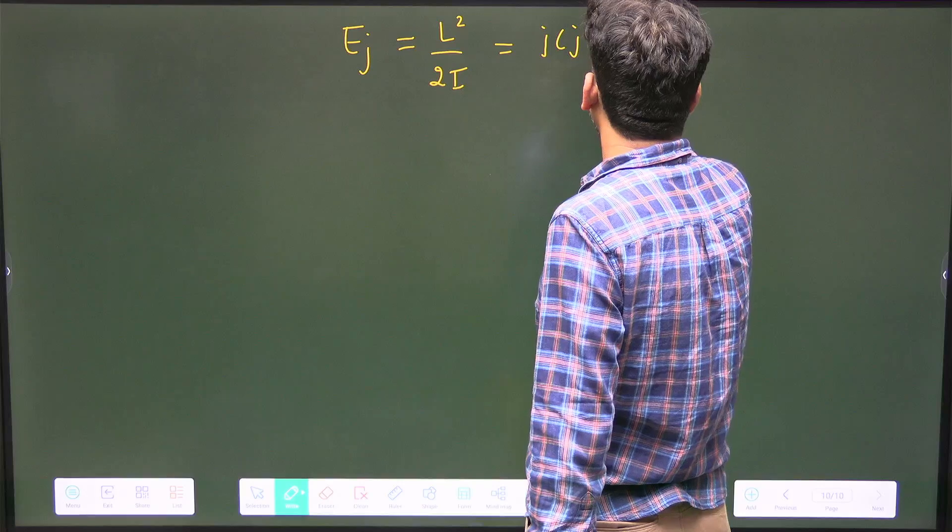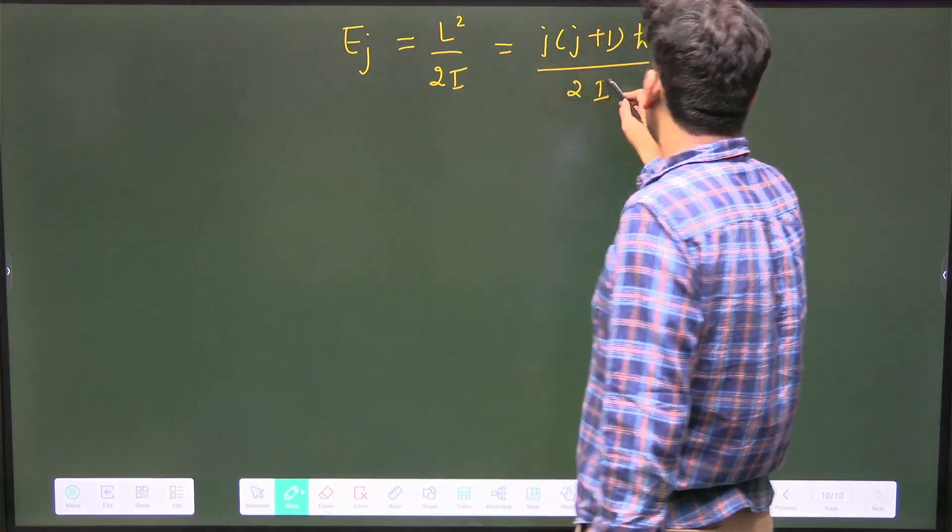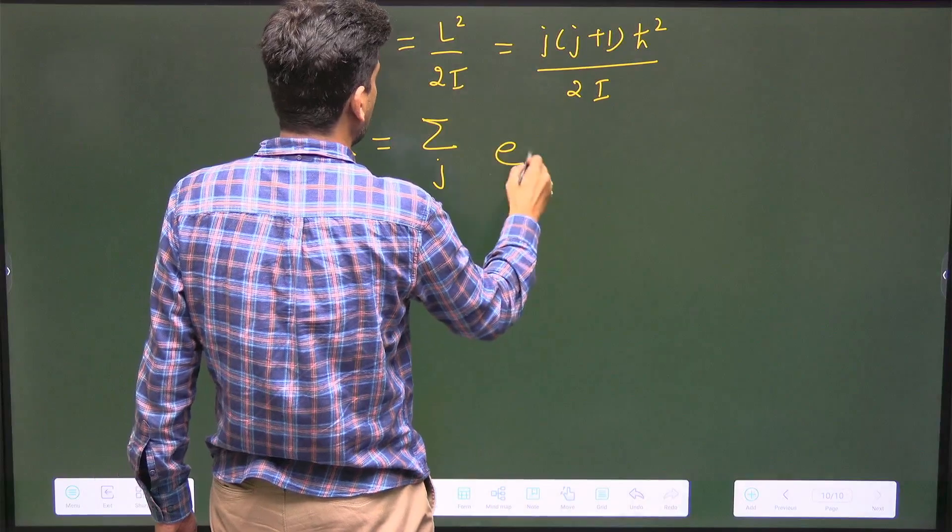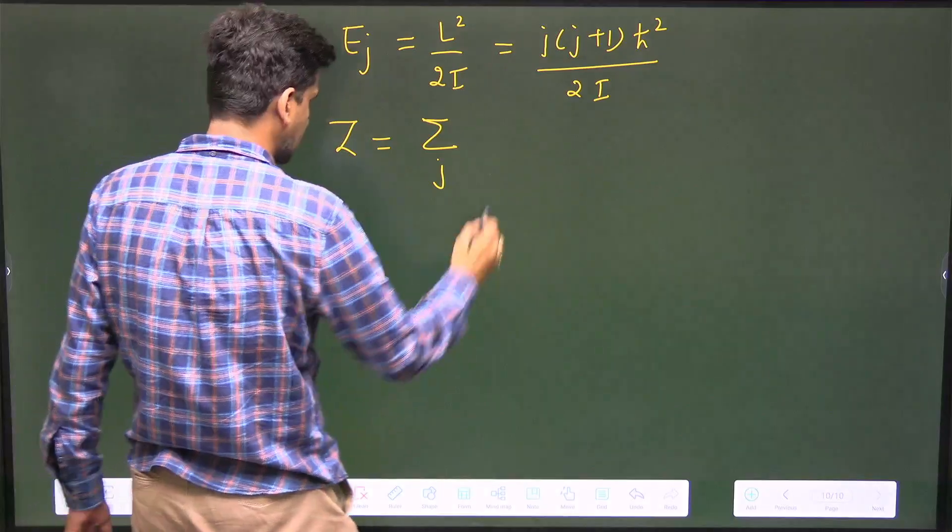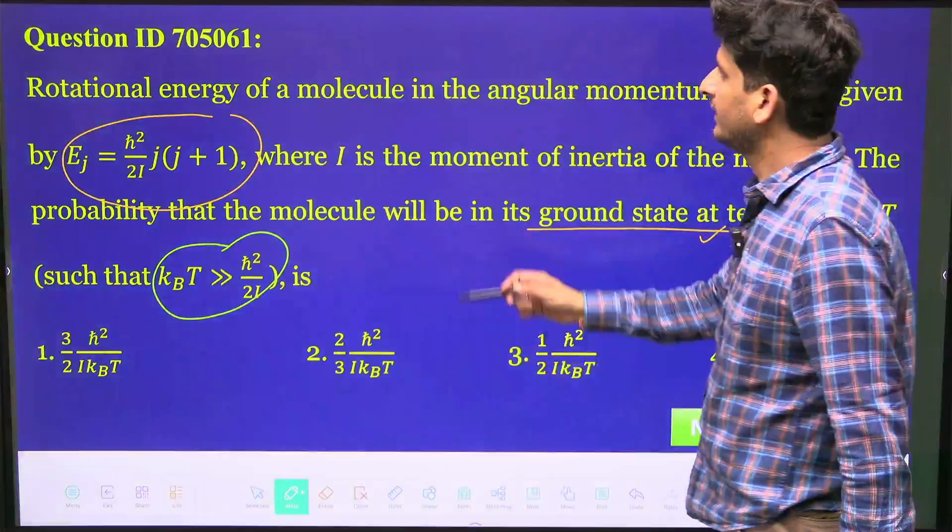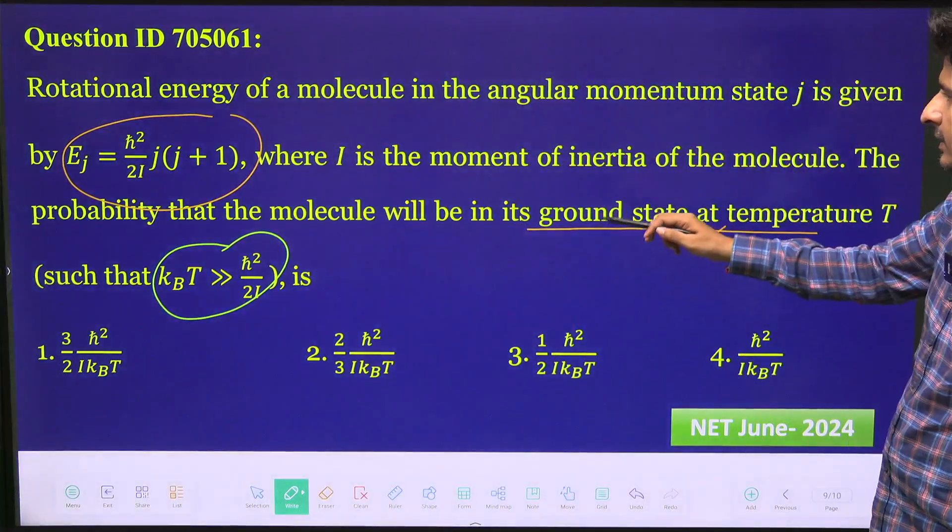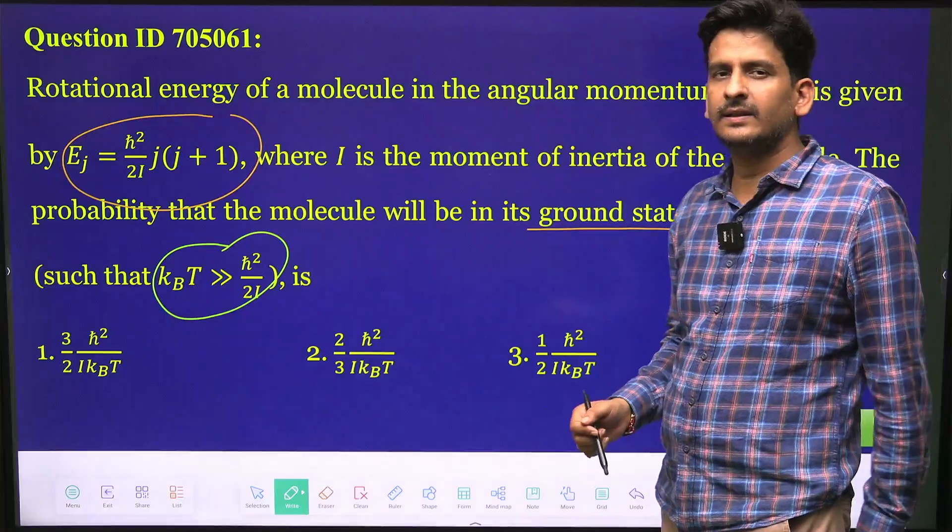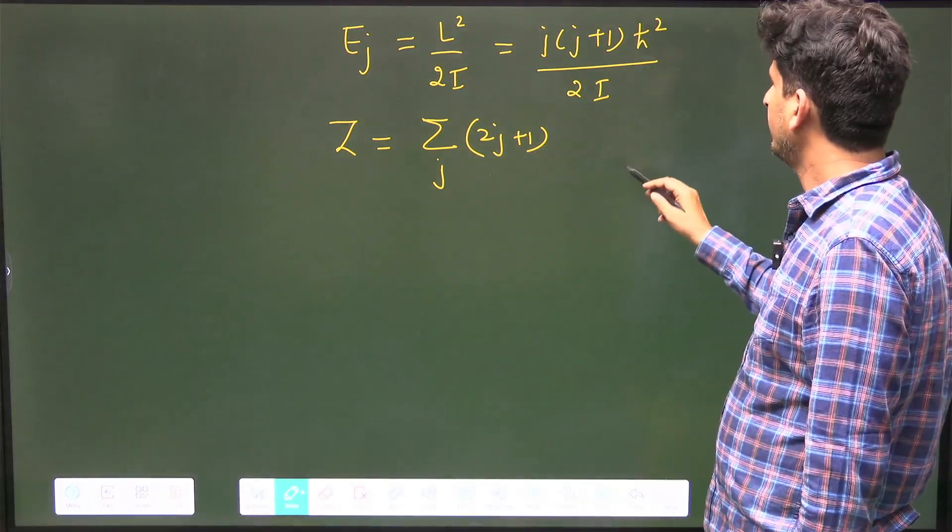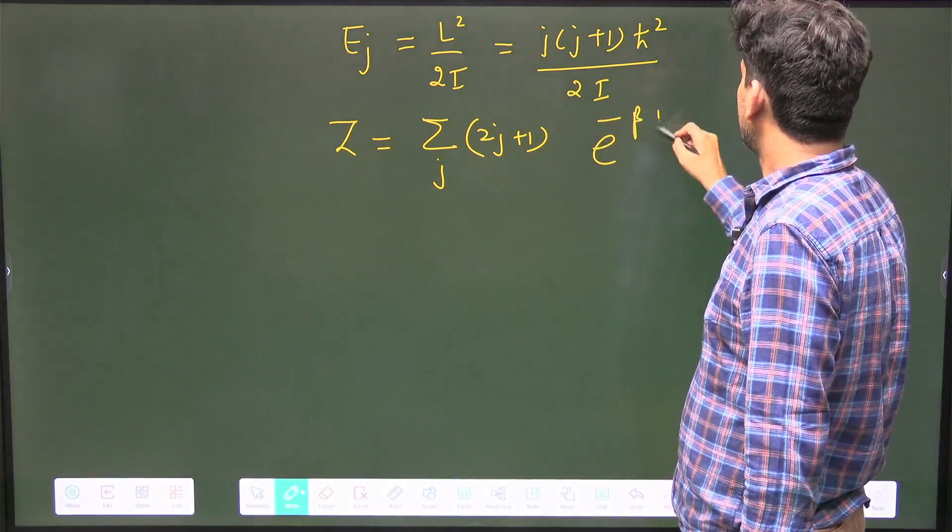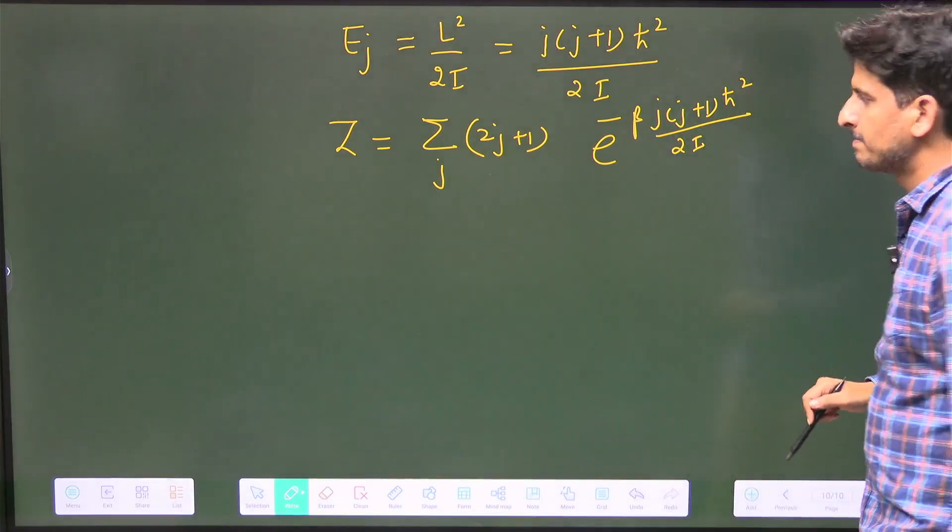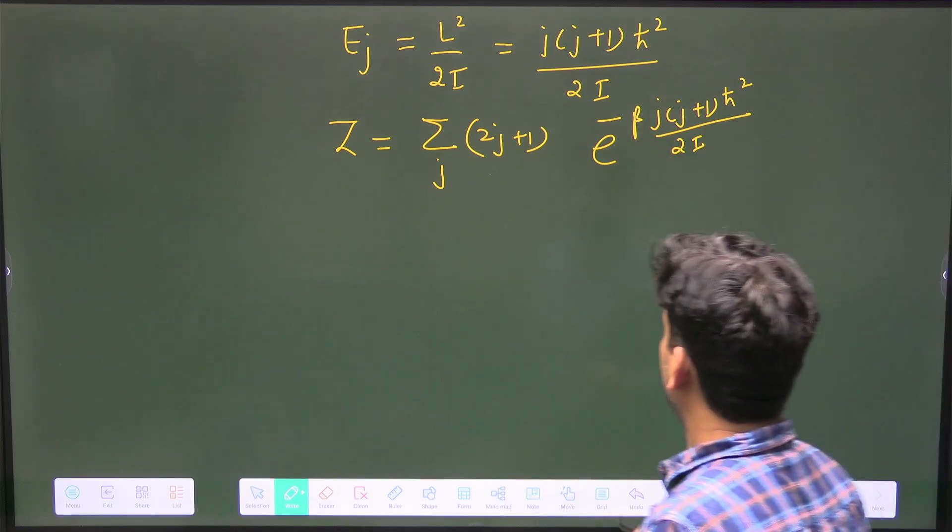So this is the energy, and the partition function Z is given by summation over j of e to the power... and there will be a degeneracy for such a system: 2j+1. Since it's not specified whether it's 1D, 2D, or 3D, I'll consider the general case. It becomes (2j+1) × e^(-β j(j+1)ℏ²/(2I)).